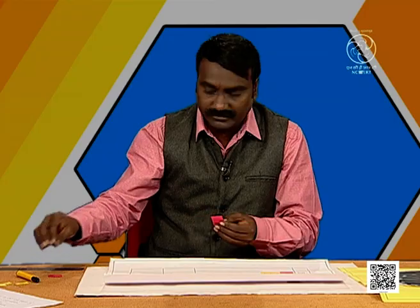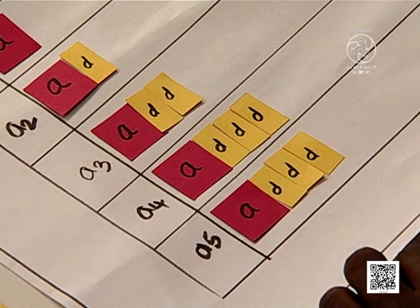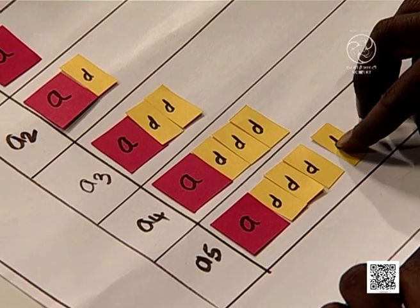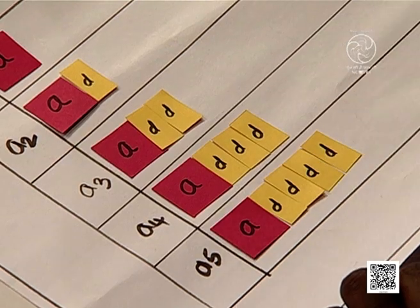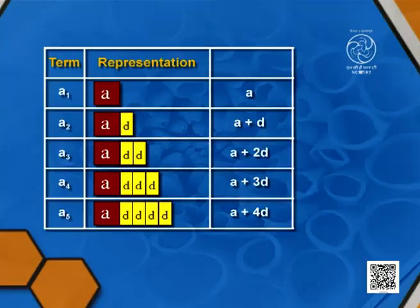Now we find the fifth term. The fifth term means adding D to the fourth term. The fourth term is A plus 3D, and adding one more D gives A plus 4D.